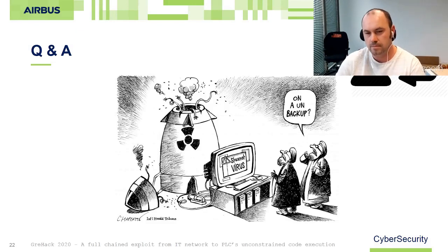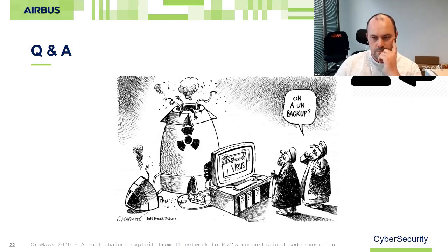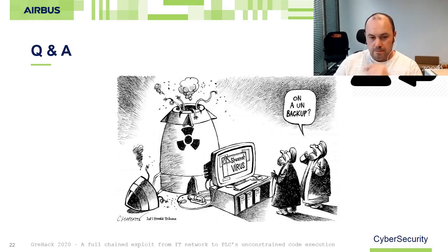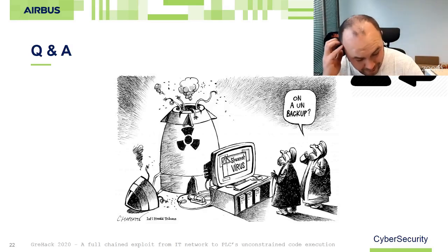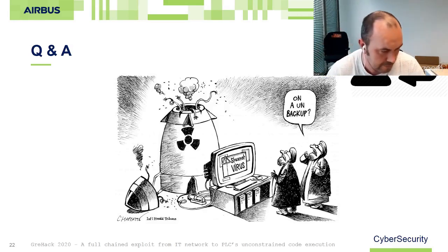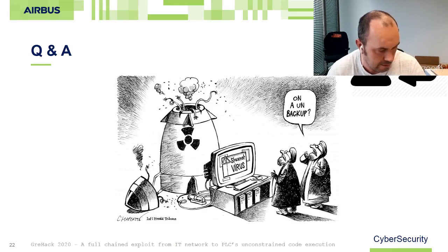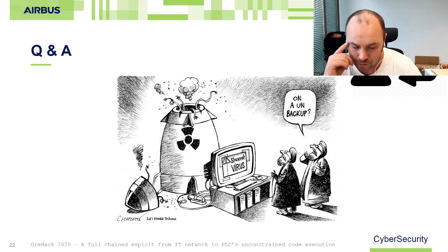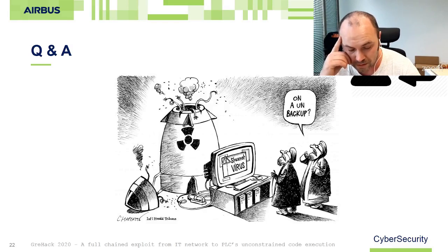Thank you for your presentation — we have time for one or two questions. First question: you recommend using a firewall, but is that possible given the protocols from Schneider products? Yes, we recommend using a firewall but also other devices like an IDS, and doing network segmentation. As we said, an ICS system is quite simply hackable, so you must do everything you can to protect the infrastructure.